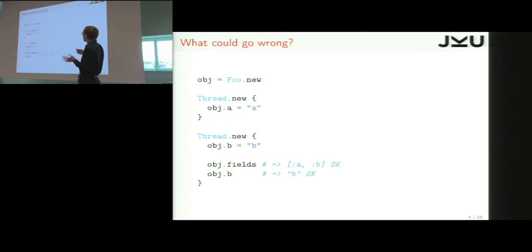Here is the first and normal output. You create an object, class foo, and then there is one thread that defines field A. The object when it's created doesn't have any fields. So it would add field A with value string A. Then the other thread adds field B with string B.